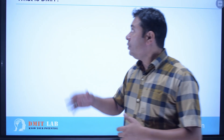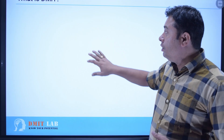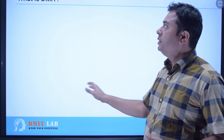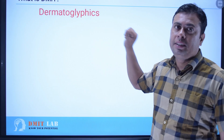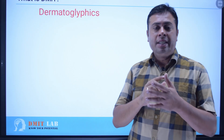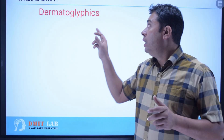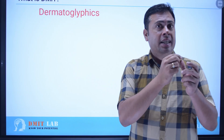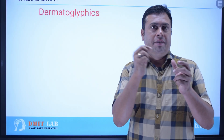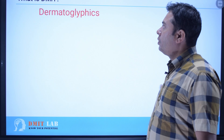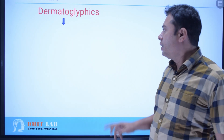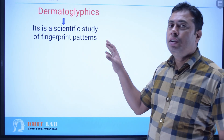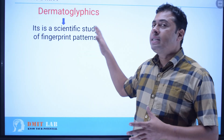Welcome to DMIT Lab. In this video we understand what is DMIT. The full form of DMIT starts with 'D' — dermatoglyphics. 'Derma' means skin, what we see in the finger. 'Graphics' means lines and ridges. So dermatoglyphics — the definition of dermatoglyphics is: it is a scientific study of fingerprint patterns.